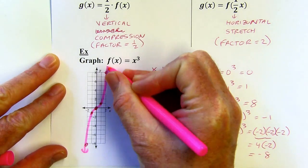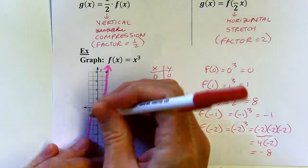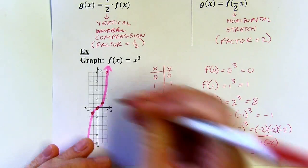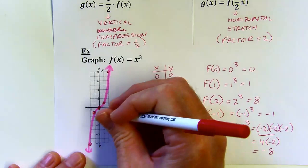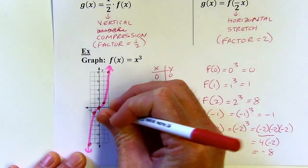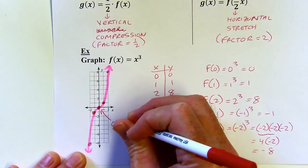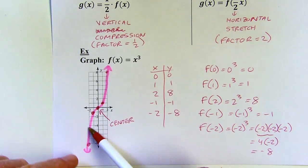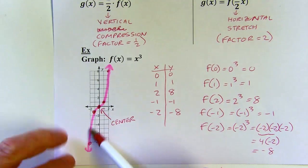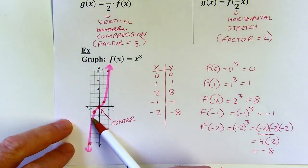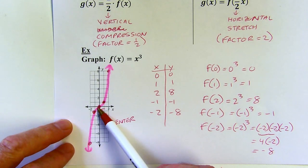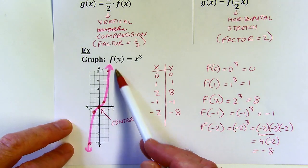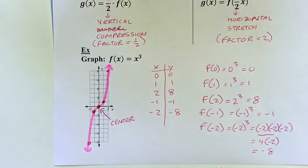It's going to go something like that. So this doesn't have a vertex, but it has a center. The center for our parent graph here is the origin, and that's where the curve is going to turn around. It kind of goes curving down or curving that way, and it's where the S changes direction of its curve — it's the center.